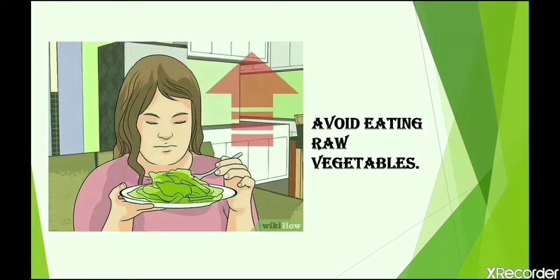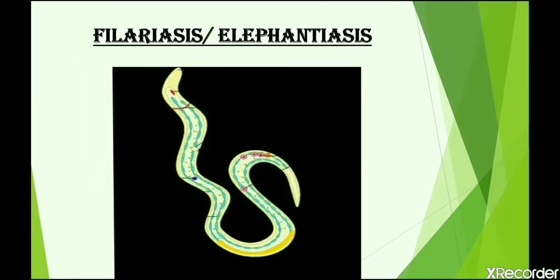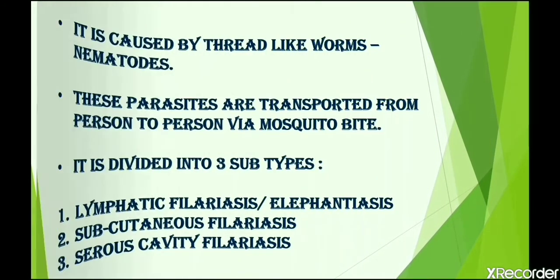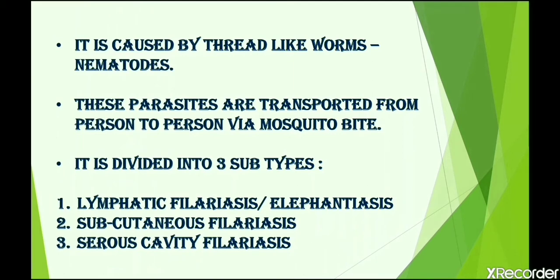The next disease is filariasis or elephantiasis. It is caused by thread-like worms called nematodes. These parasites are transported from person to person via mosquito bite. It is divided into three subtypes: lymphatic filariasis or elephantiasis, which is very common and will be studied here; subcutaneous filariasis; and serous cavity filariasis.